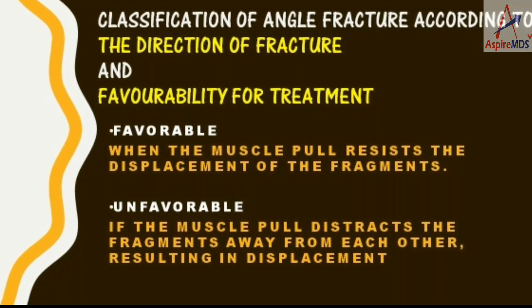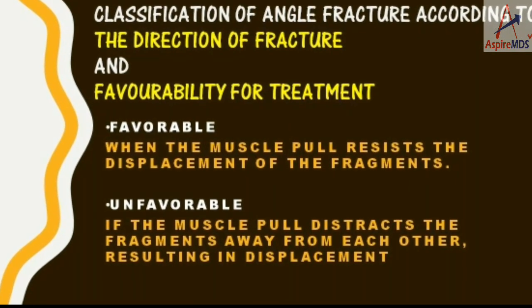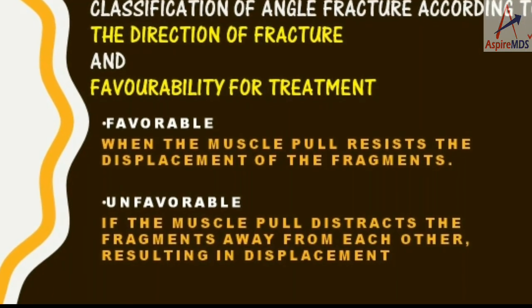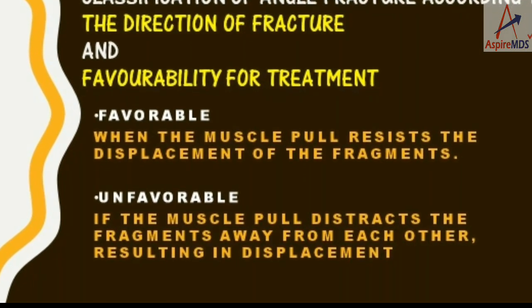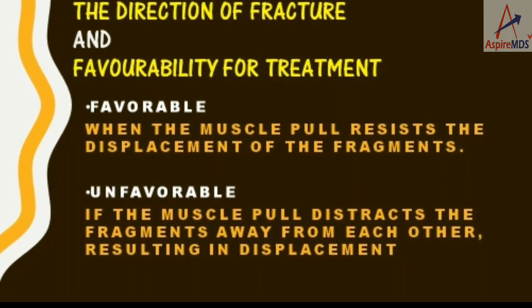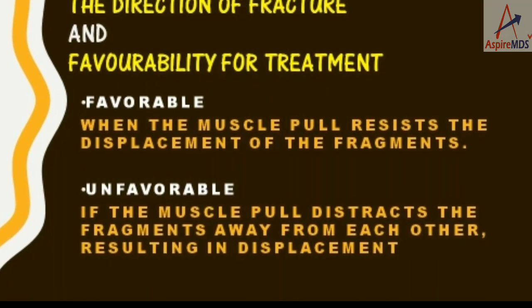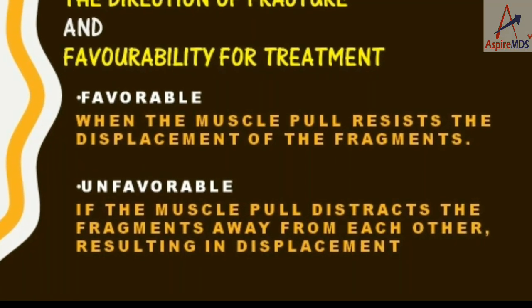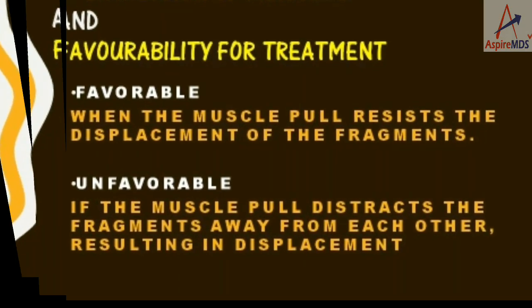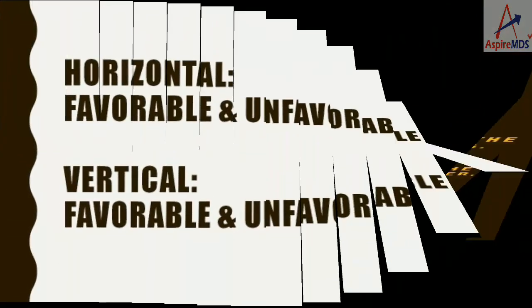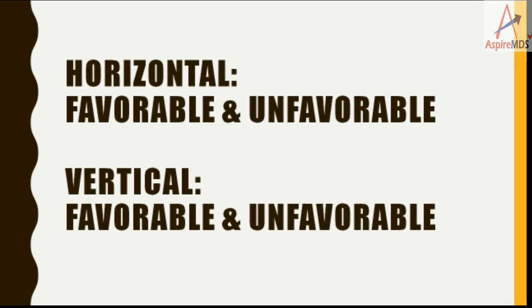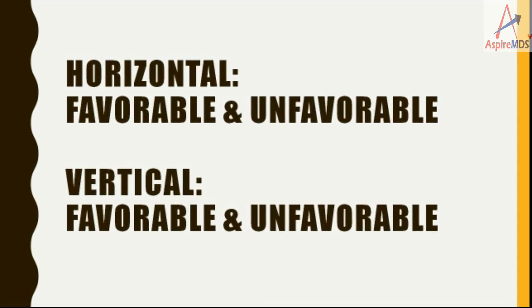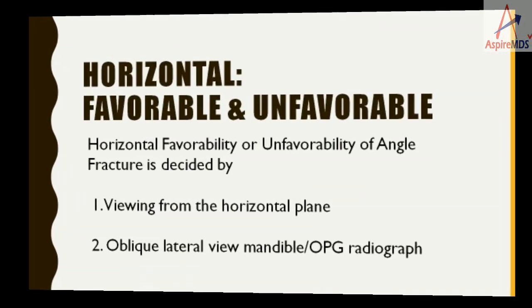A favorable fracture is one in which the muscle pull will resist displacement, whereas in an unfavorable fracture, the muscle pull will distract and cause displacement of the fractured fragments. Based on this, they are classified as horizontally favorable, horizontally unfavorable, vertically favorable, and vertically unfavorable fractures.